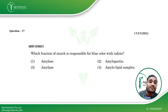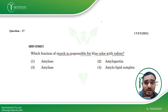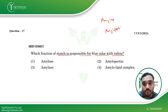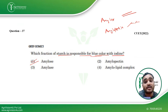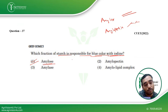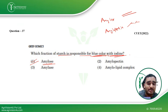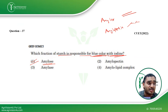Coming to the next question: which fraction of starch is responsible for the blue color with iodine? We all know starch has two components — amylose and amylopectin. Amylose is the linear chain and amylopectin is the branched chain. Amylose is responsible for the blue color; it reacts with iodine and forms a blue-black complex. Iodine test is very commonly used to detect the presence of starch in a sample and in adulteration testing as well. This question was asked in CUET 2022.